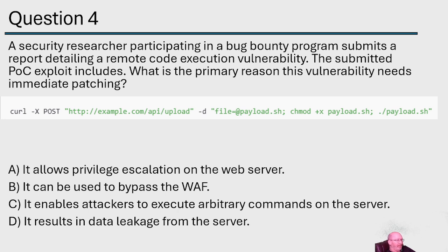If you said A — privilege escalation — you'd be incorrect. C is actually the better answer: enables attackers to execute arbitrary commands on the server. That is the entire concept of remote code execution. You didn't even need to read the script to answer this — the script is almost there to sidetrack you. The answer is C.